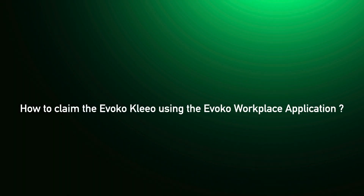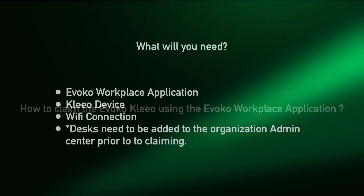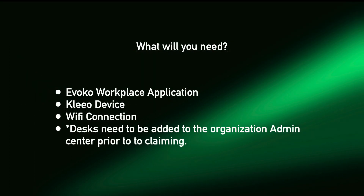How to claim the Avoco Clio using the Avoco Workplace application. We'll need to download the Avoco Workplace application on either an iOS or Android device. We'll also need the physical Clio device itself, an active Wi-Fi connection, and we'll need to make sure that desks have been added to the Organization Admin Center prior to claiming.